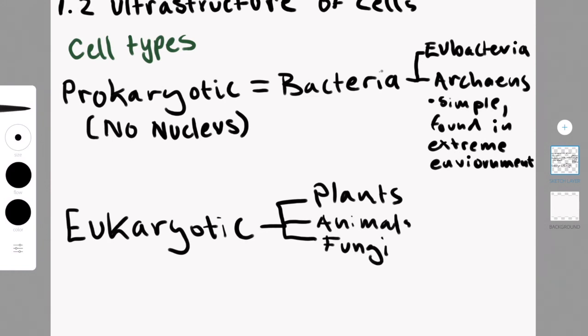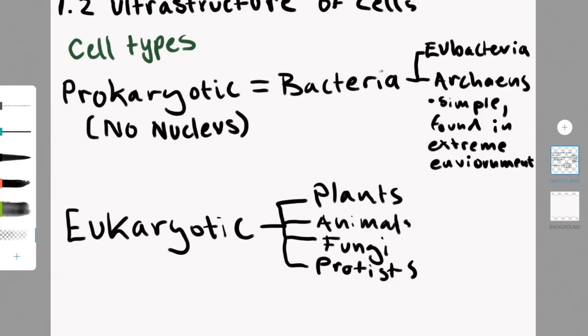So there are different cell types. The two main cell types are prokaryotic cells and eukaryotic cells.